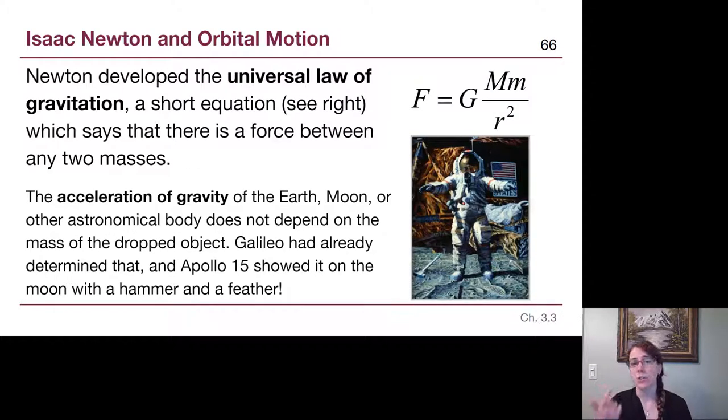Isaac Newton developed many different things, including the section of the textbook that we skipped over. But the one that we're going to focus on is an equation that is the single most important equation for our introductory astronomy understanding. It's the universal law of gravitation. It's a fairly short-looking equation on the right here that basically tells us that if we have two masses separated by a certain distance, there is a force pulling them towards each other. That force of gravity is based on the two masses and on the distance between them.